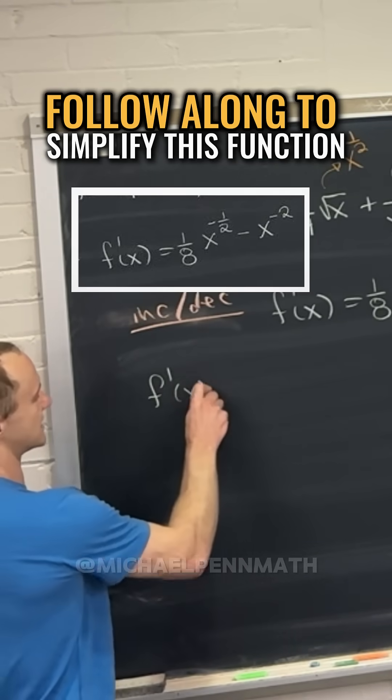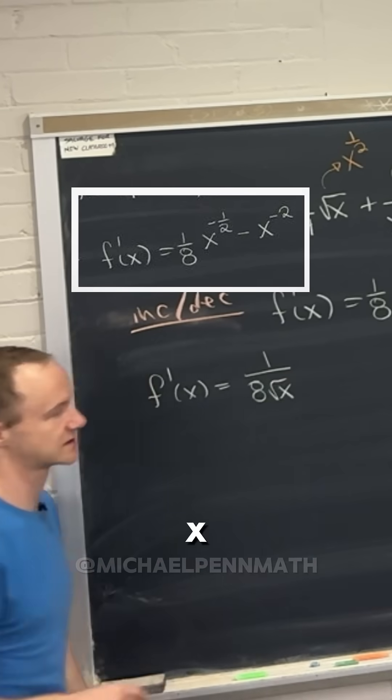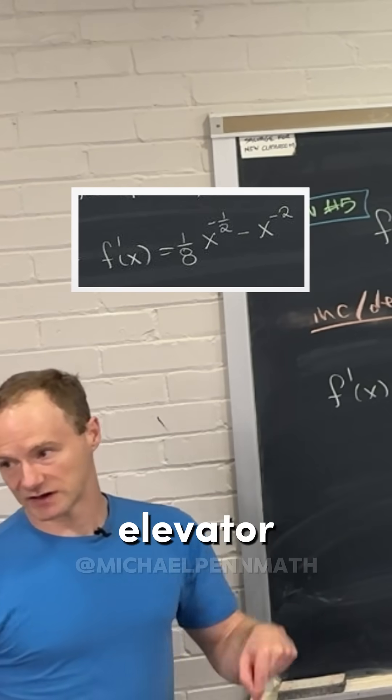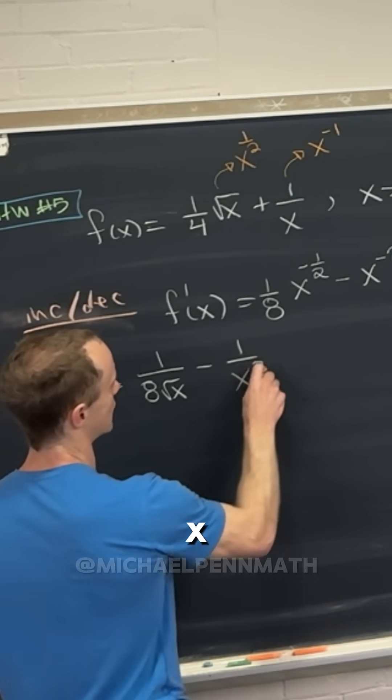So let's see, that's going to give us this. So this is going to be 1 over 8 times the square root of x. The minus sign is like an elevator downstairs, and then the half is like a square root. And then we'll have minus 1 over x squared.